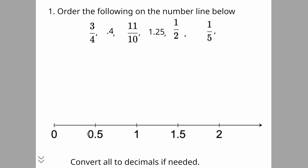Starting off fairly easy — every little hash mark here is called out, so there's nothing we have to guess. We don't have to figure out what we're counting by; we're counting by a half, or each increment is by a half. In general, to solve these problems, you want to convert them all to decimals — that's the easiest way. This is typically a drag-and-drop question.